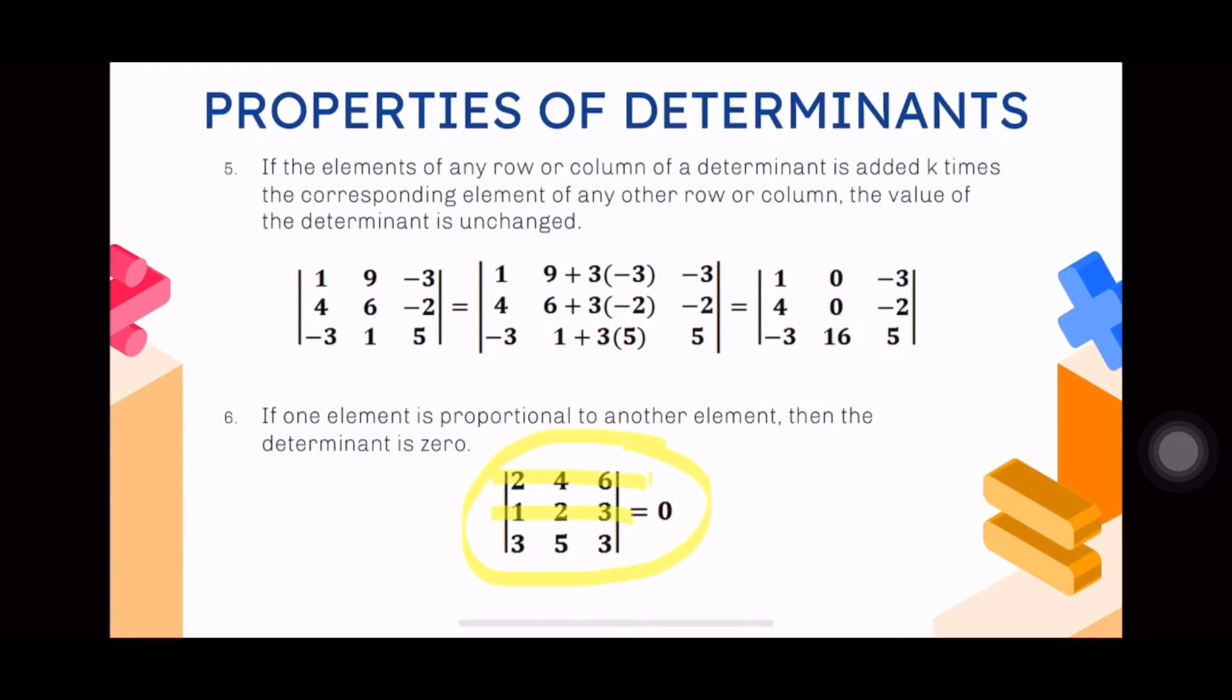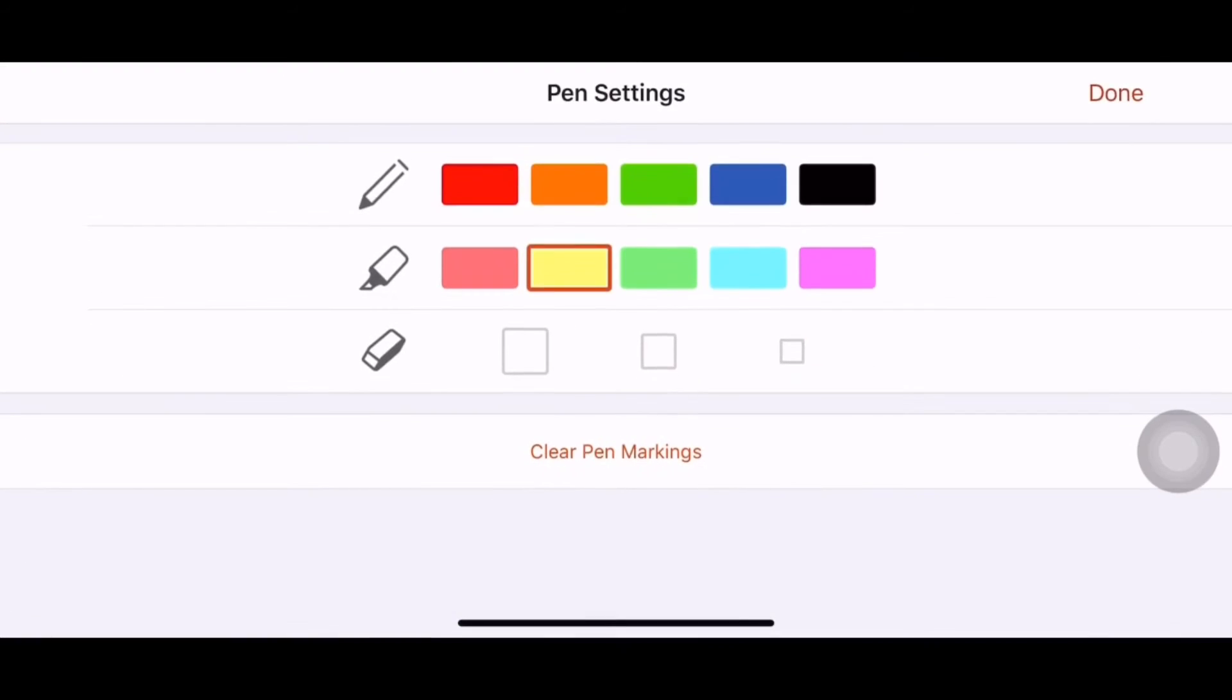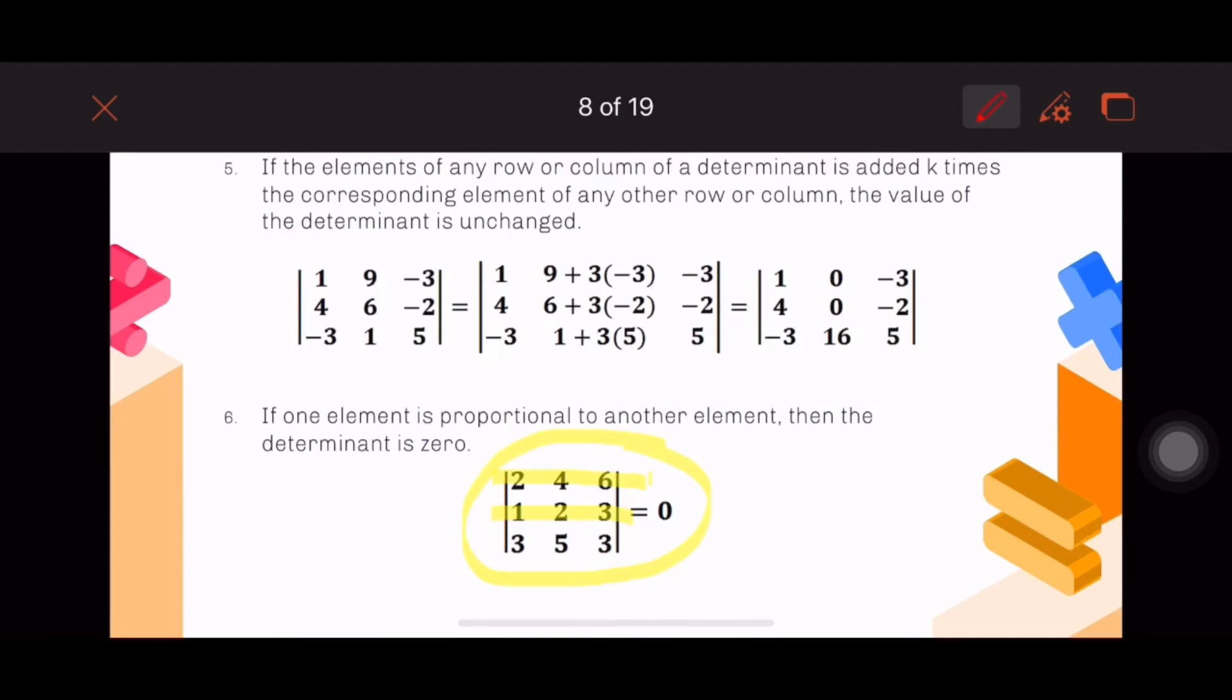You can factor out two from the first row. When you factor out two from the first row, you'll get two times the determinant with one, two, three; and the second row is one, two, three again; and the third row is three, three, five. Now this falls under the first property of having identical rows or columns, which equals zero. If this determinant is zero, multiply it by two, you'll still get a zero determinant for your answer.